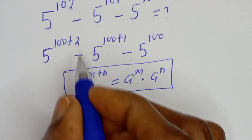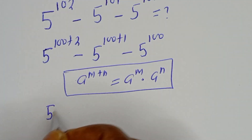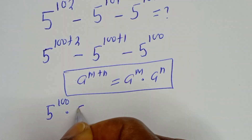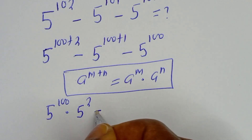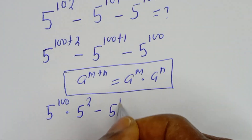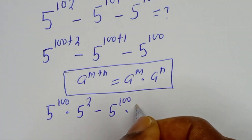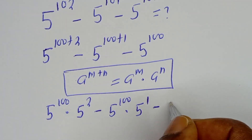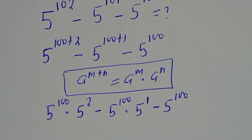So this can be written as 5 to the power of 100 multiplied by 5 to the power of 2, minus 5 to the power of 100 multiplied by 5 to the power of 1, minus 5 to the power of 100.